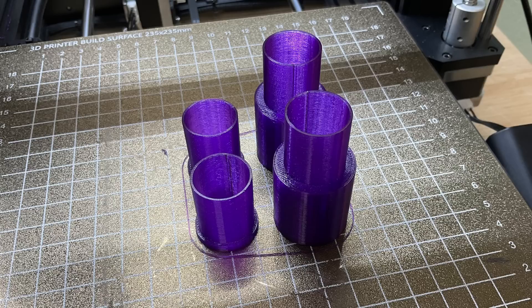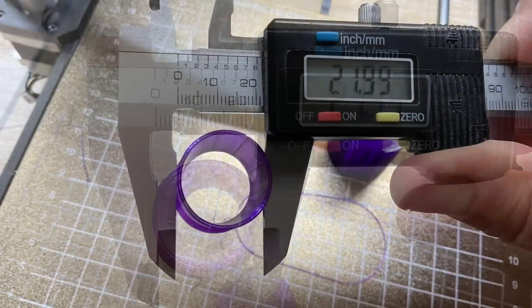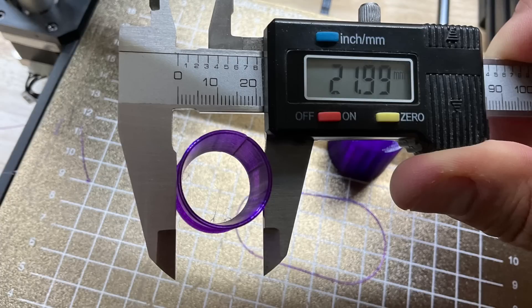There's no stringing. This is a very clean set of prints and dimensionally spot-on. They were 22 millimeters by design and they're almost perfectly there. This is the bottom one and this is the top insert. So now I'm ready to put them in the fence.